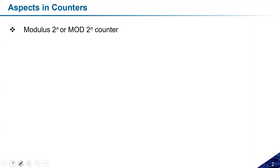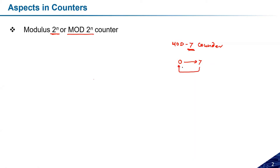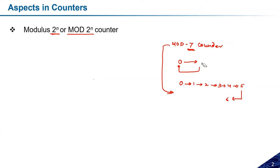A counter can be a 2^N counter or a modulus less than 2^N counter. For a modulus-7 counter, the total number of sequences is 7. Starting from 0, the sequence is 0, 1, 2, 3, 4, 5, 6 — and then it comes back to 0. So this is the modulus-7 counter, with 7 total states from 0 to 6.